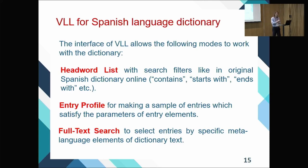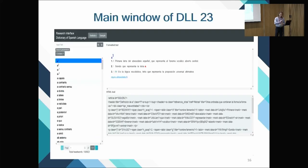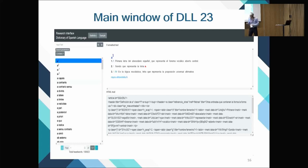This is a screenshot of the main window of the Spanish dictionary. We are probably on the first lemma in the dictionary — homonym number one — and the underlying code is visible here. There are over a hundred thousand lemmas in that dictionary.